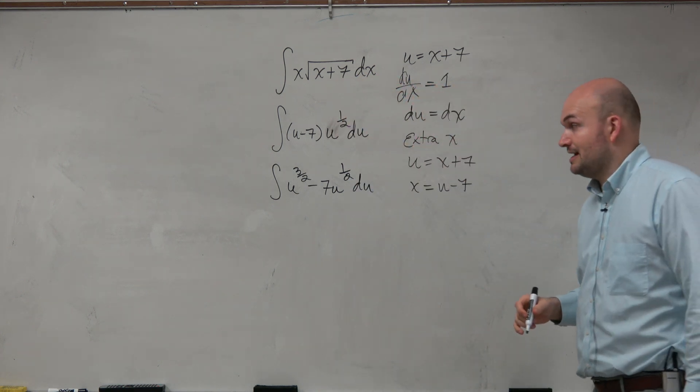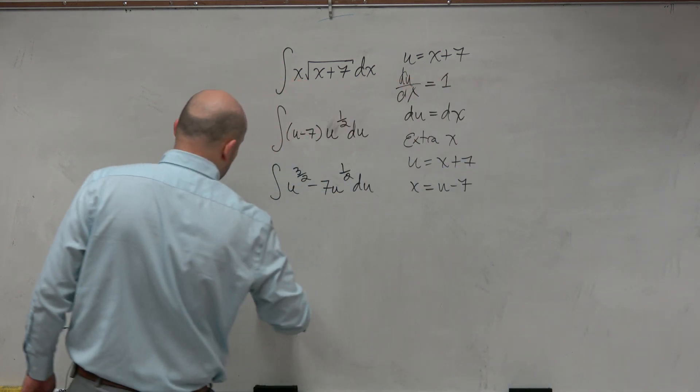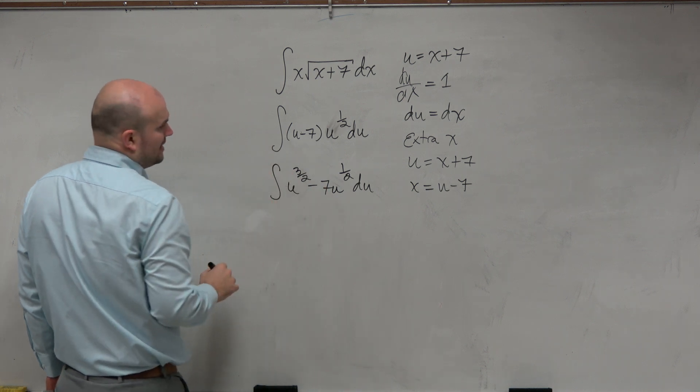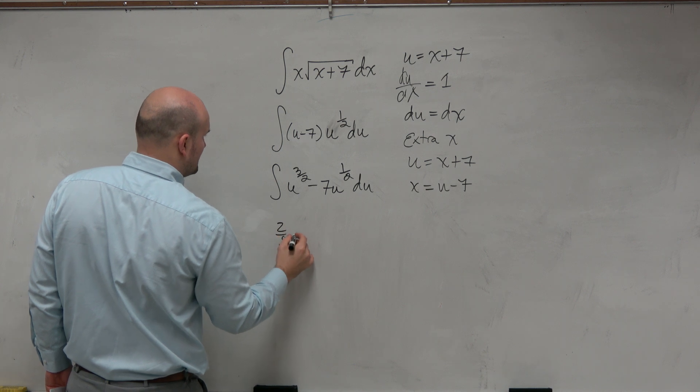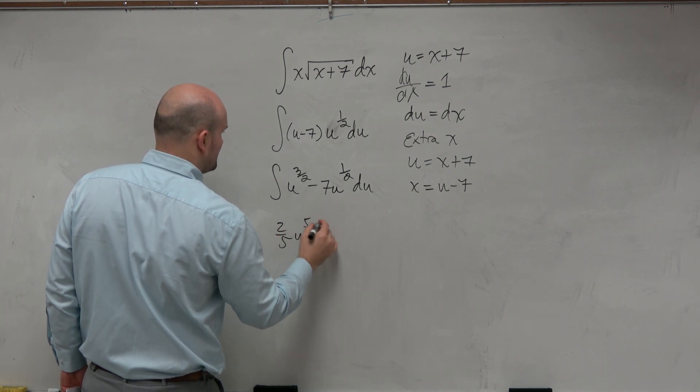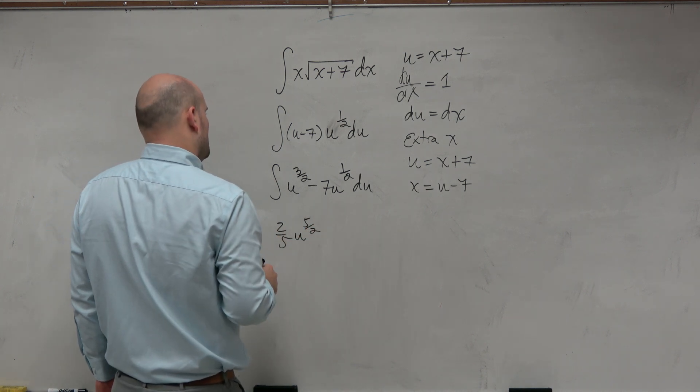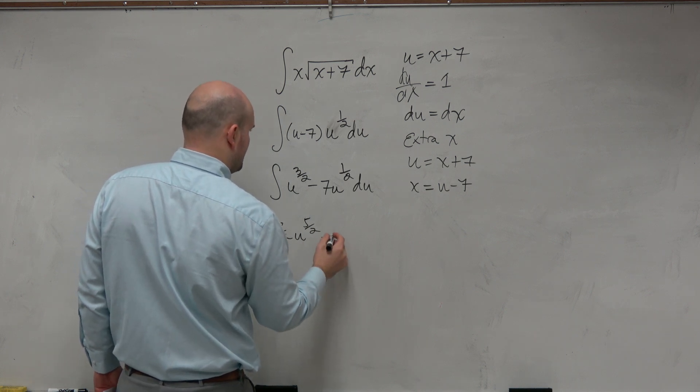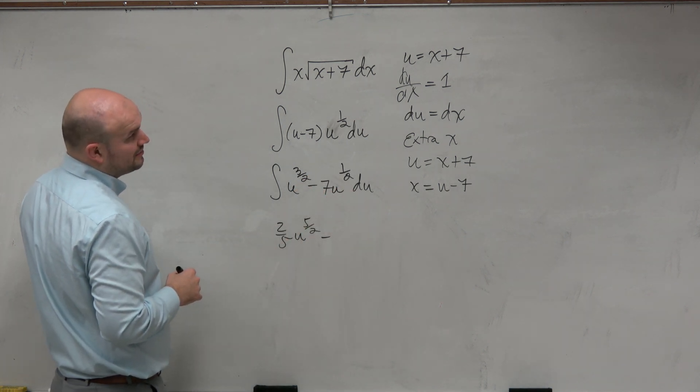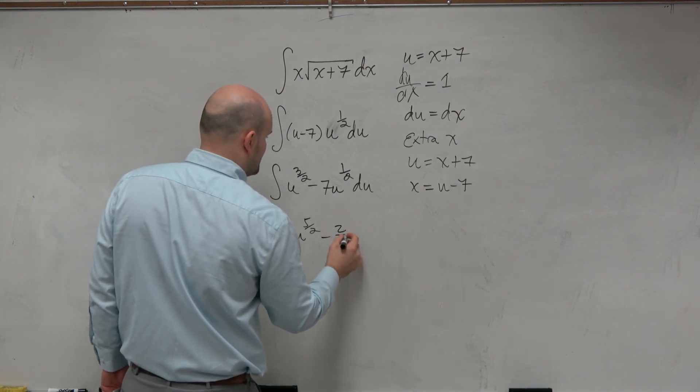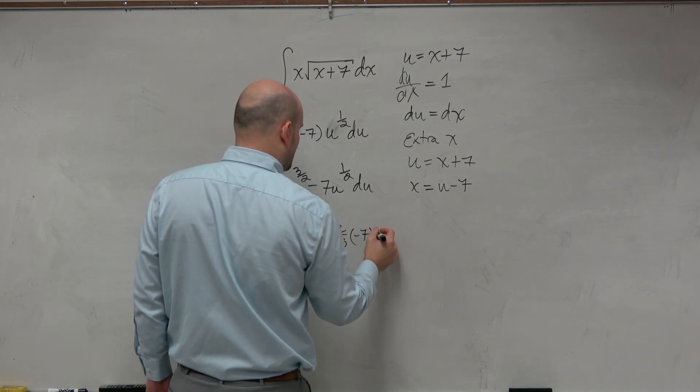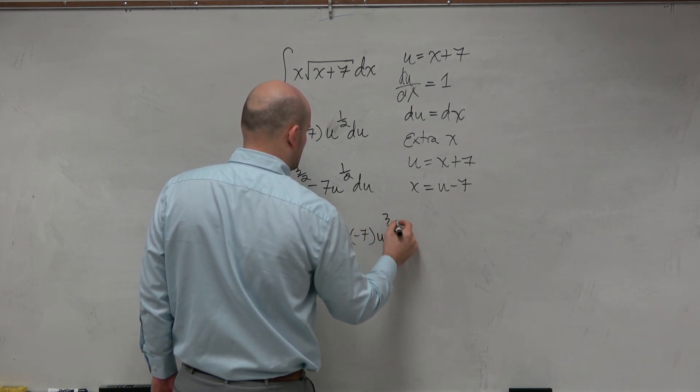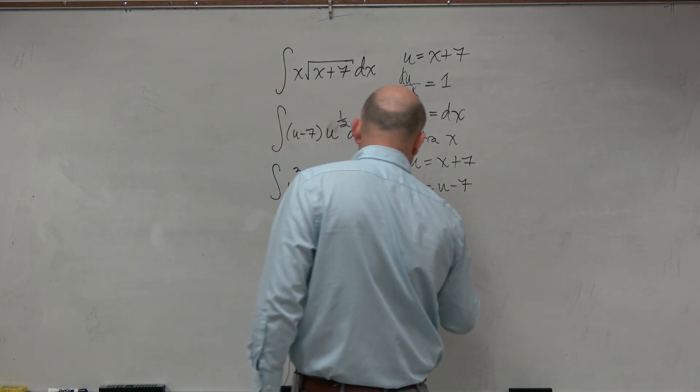And now, I can just go ahead and integrate that by using my power rule. So when I go ahead and integrate this, I get plus 1, so that would be 5 halves, so that would be 2 fifths u to the 5 halves, minus plus 2 over 2, which would be 3 halves, so that would be 2 thirds times negative 7 to the u to the 3 halves plus C.